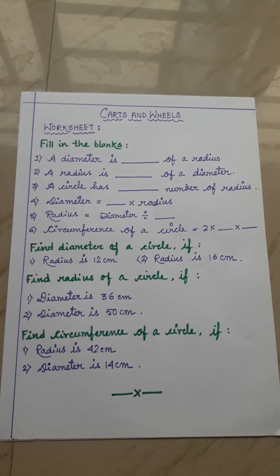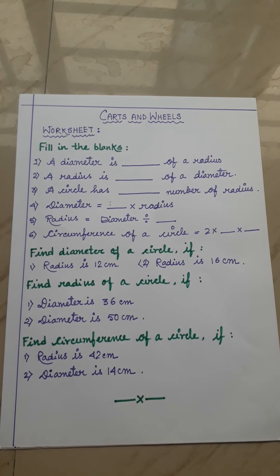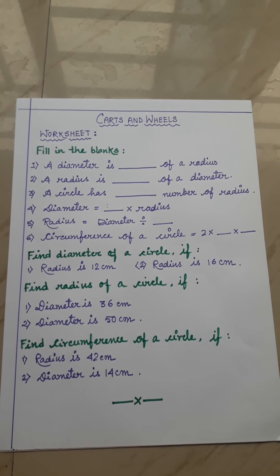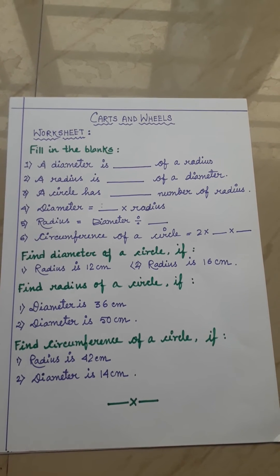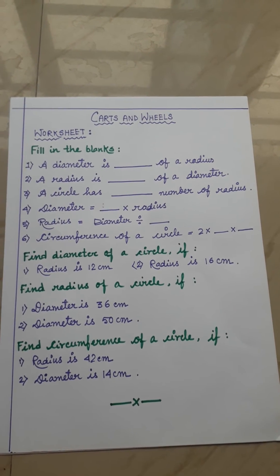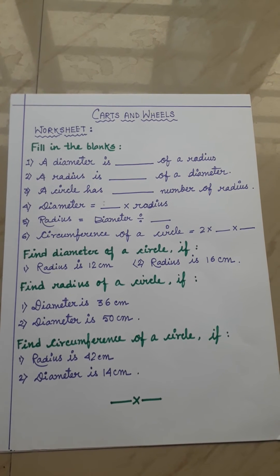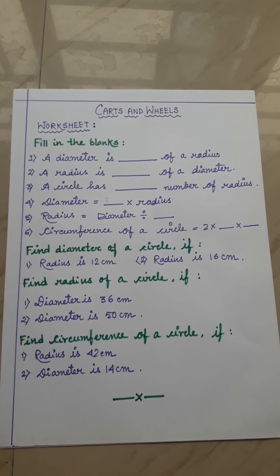Third number is: find radius of a circle if (1) diameter is 36 centimeter (2) diameter is 50 centimeter. Here diameter is given and you have to find out radius of the circle, which is very easy. You can find out easily by using the formula.